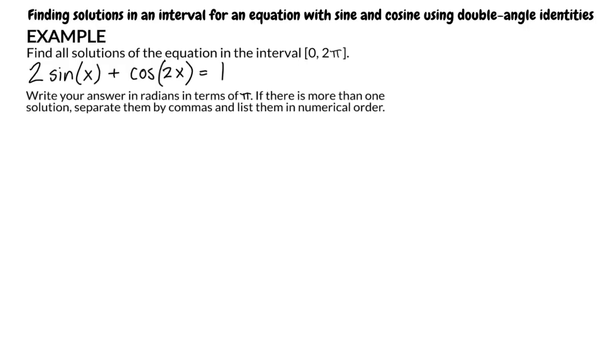This is a topic video for finding solutions in an interval for an equation with sine and cosine using double angle identities. Let's begin by looking at a problem. Find all solutions to the equation in the interval 0 to 2 pi of 2 sine of x plus cosine of 2x equals 1.